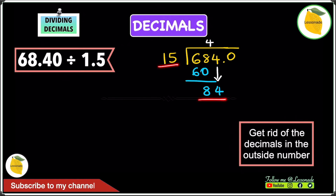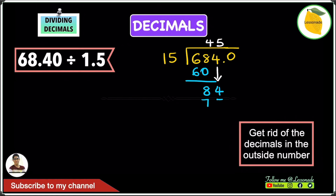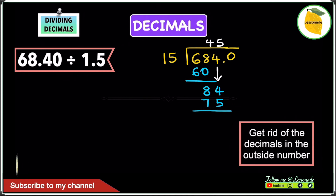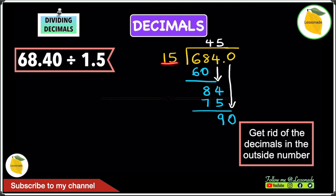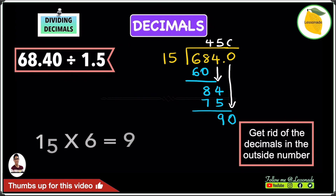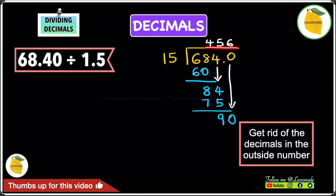Does 15 go into 84? Yes — 15 goes 5 times because 15 times 5 is 75. Write 75 down. 84 minus 75 is 9. Next, bring the 0 down to get 90. Does 15 go into 90? Yes, it goes 6 times. Write the 6. So far we have an answer of 456.